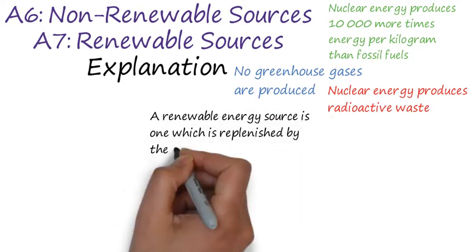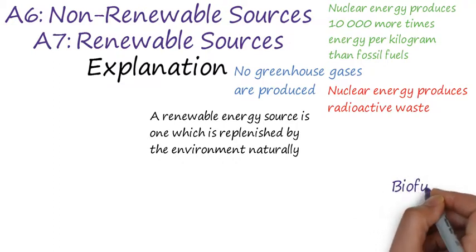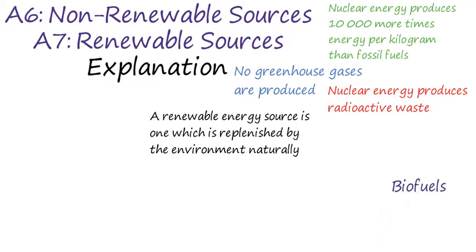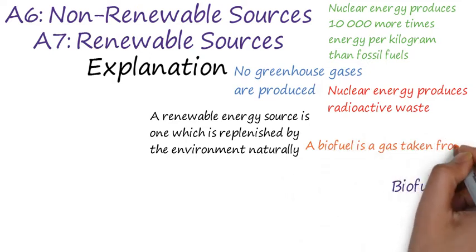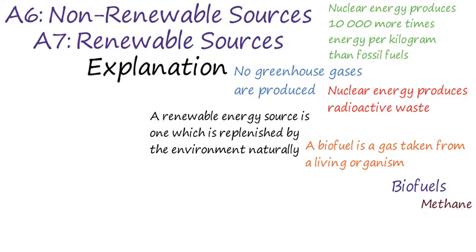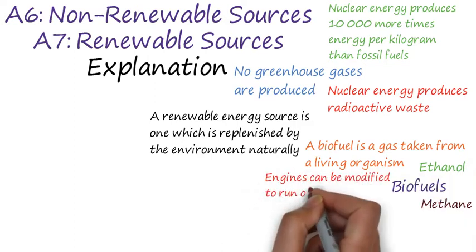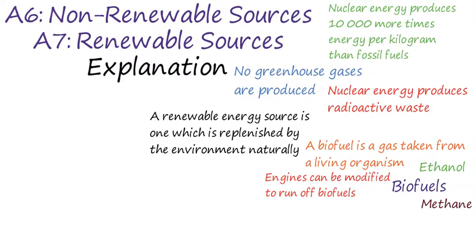For the next part of the video, we will look at A7 renewable energy sources. A renewable energy source is one which is replenished naturally by the environment. You'll need to know in detail the main types of renewable energy. The first type we'll look at is biofuels. A biofuel is a gas taken from a living organism. For example, methane is produced by cows in their waste. Ethanol is another biofuel produced from fermented sugar cane. We can modify engines to run off biofuels instead of fossil fuels for transportation and in small power plants.